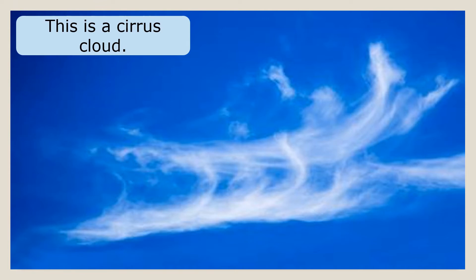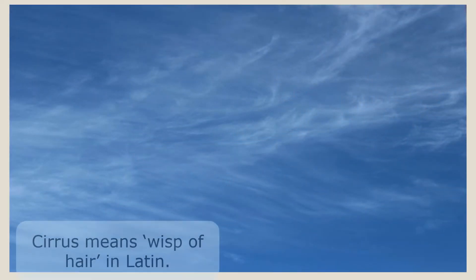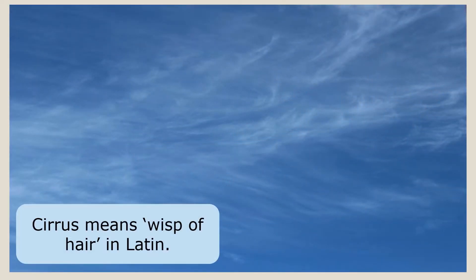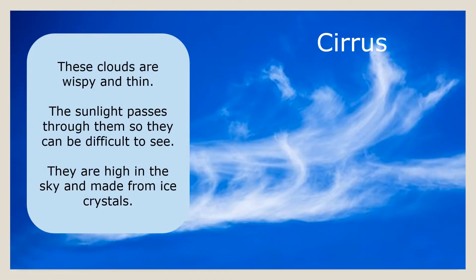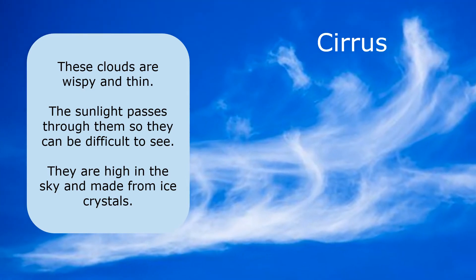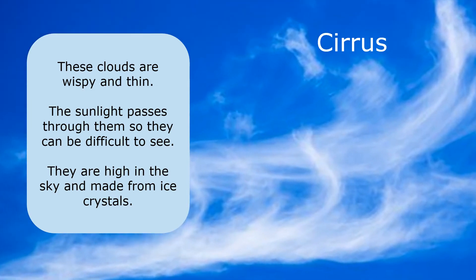This is a cirrus cloud. Cirrus means wisp of hair in Latin. These clouds are wispy and thin. The sunlight passes through them so they can be difficult to see. They are high in the sky and made from ice crystals.